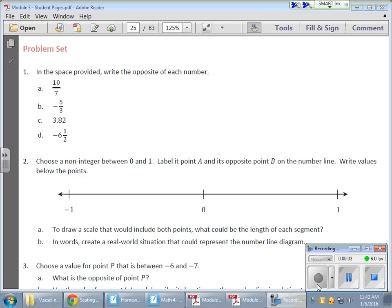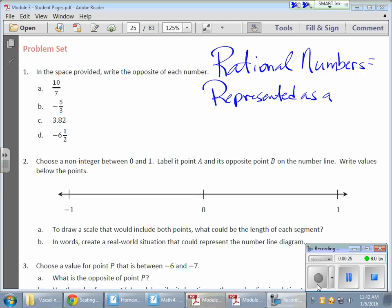So in today's math lesson, we started talking about rational numbers. Rational numbers are basically numbers that can be represented as a fraction, like three-quarters, three-tenths, or five and three-fifths. Those are all rational numbers.